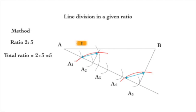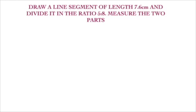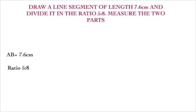This line segment is now divided in the ratio 2 is to 3. Very nice construction. The first problem of the textbook is: draw a line segment of length 7.6 centimeters and divide it in the ratio 5 is to 8. Measure the two parts. First, write the given: AB is equal to 7.6 cm, and we have to divide it in the ratio 5 is to 8. Therefore, total ratio is equal to 5 plus 8, which is equal to 13.